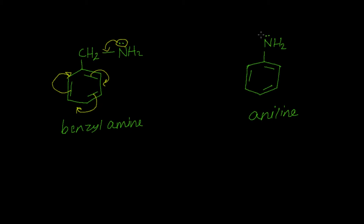But in the case of aniline, this lone pair of electrons will participate in the resonance of the benzene ring. The double bonds shift around the ring — this double bond moves here, this double bond moves here, and this double bond moves here — and so on. So the lone pair of electrons is consumed in the resonance of this compound, decreasing the electron density on the nitrogen atom, which is the most basic atom here.